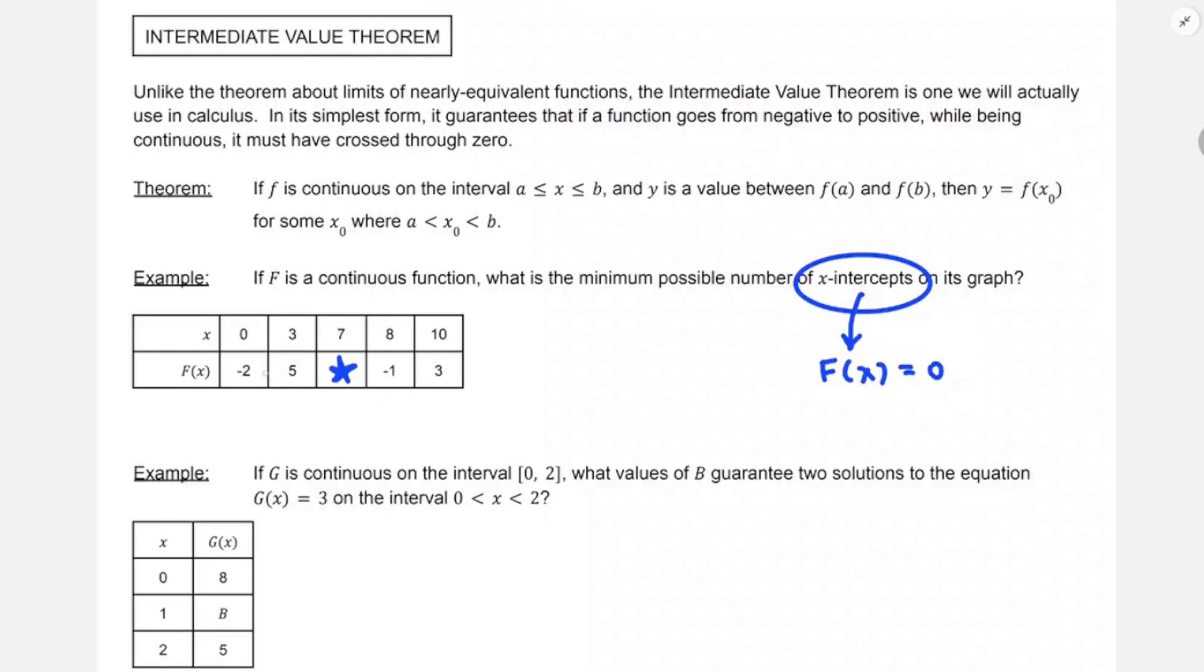But if f is a continuous function, which we're told it is, when f goes from negative 2 to 5, it must have gone through 0, and when f goes from negative 1 to 3, it must have passed through 0. So I'm seeing at least three zeros on the graph, just based on the table. That's the minimum possible number of x-intercepts.